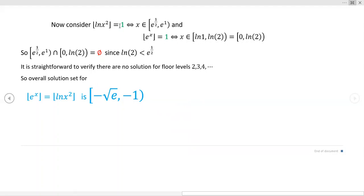And I apologize, if you go back and look at yourself, it's not as hard as I'm making it sound. But for these floor levels of one, we get these two solution intervals for both the left-hand side and the right-hand side of the equation. But notice they don't overlap.